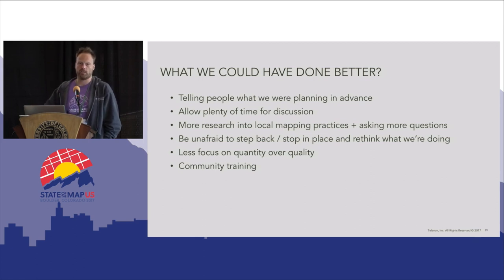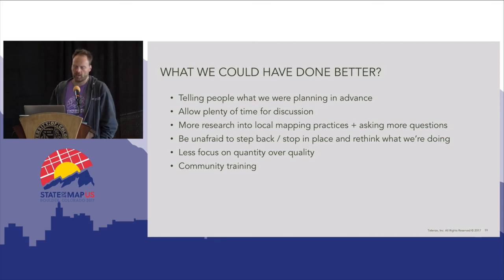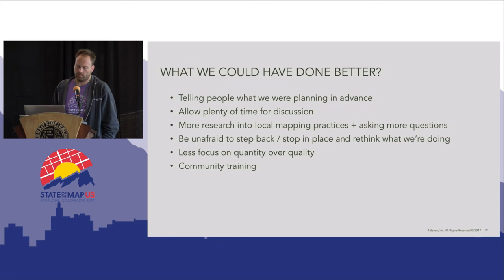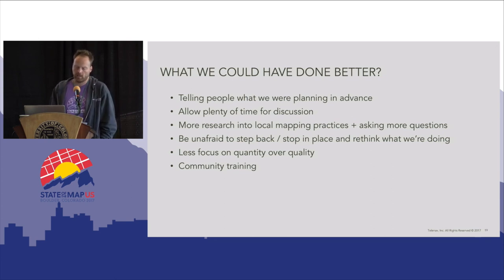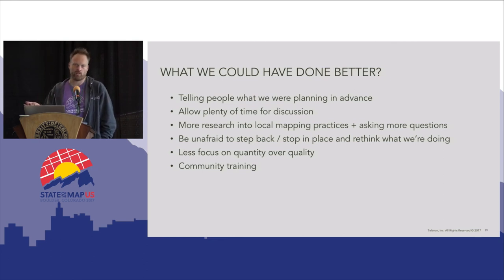We needed to do more research into local mapping practices, which means reaching out to the top mappers in the area and carefully studying region-specific mapping. Also, be unafraid to step back — stop what you're doing for a while, wait for the outcomes of discussions, and move on to something else in the meantime. Focus on quality over quantity. We also added community training to our onboarding for our map team because at first the training was focused on technical aspects — what is a node, a way, a relation, how to use JOSM — but now we also focus on the fact that you're not mapping in a vacuum. You're doing this with all these other people.